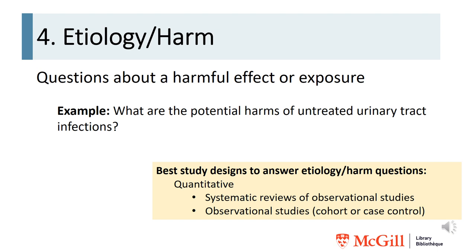For etiology or harm questions, for example: what are the potential harms of untreated urinary tract infections? The best study designs to answer etiology or harm questions are quantitative, either systematic reviews of observational studies or observational studies such as cohort or case control.